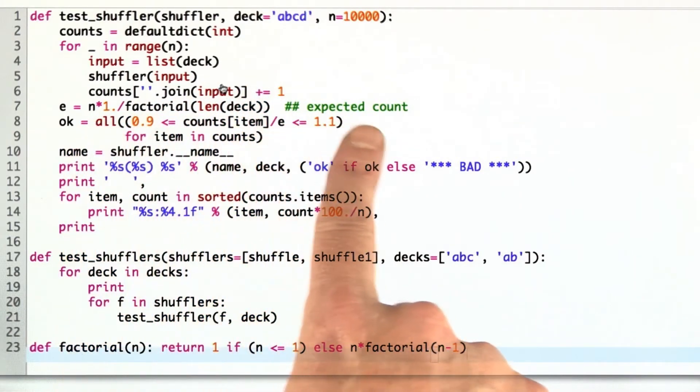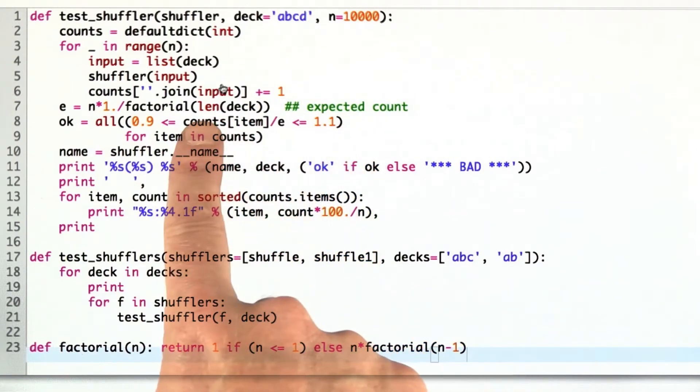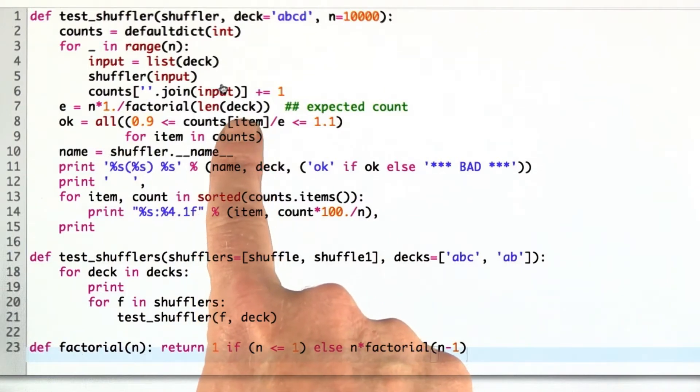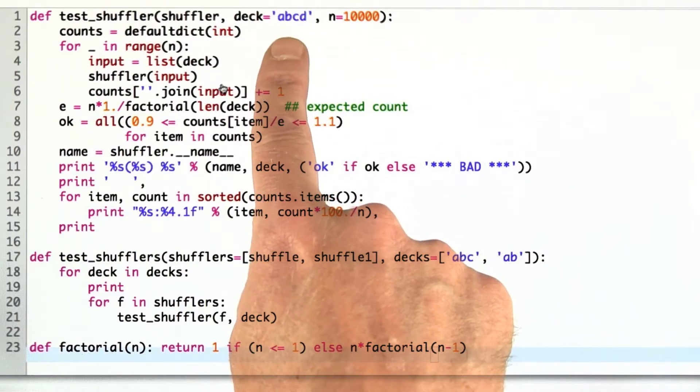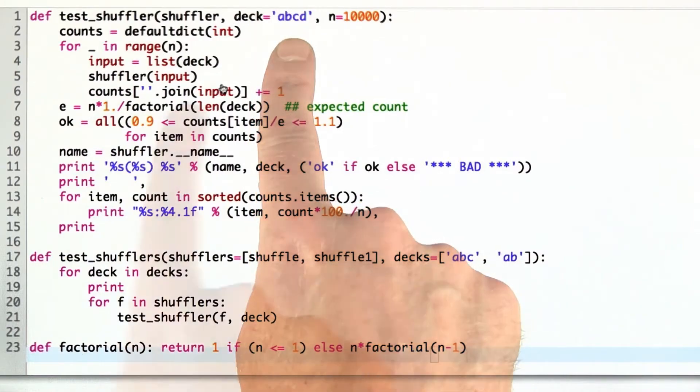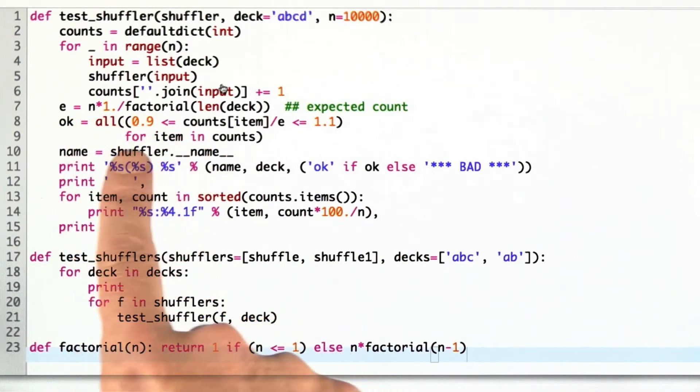Now, we calculate the expected count, what we expect to get. That's 1 over the factorial of the number of items in the deck. Because all n factorial, where n is the length of the deck, items are equally probable. The expected count should be n times that.